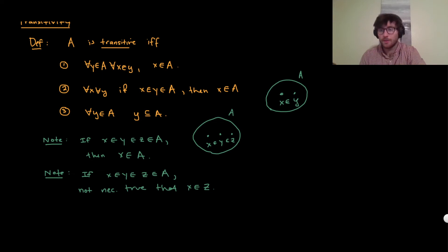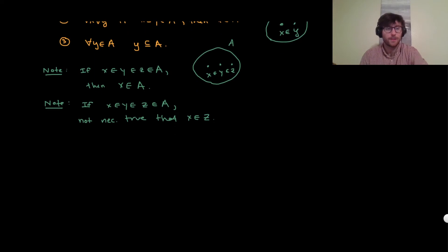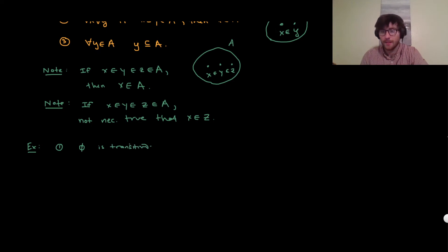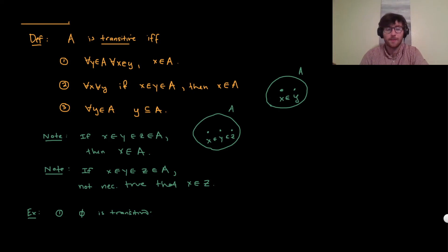So, some examples of transitive sets. The empty set is a transitive set. One way to see this is from the third condition: there are no elements of the empty set, so vacuously all of its elements are subsets of the empty set.